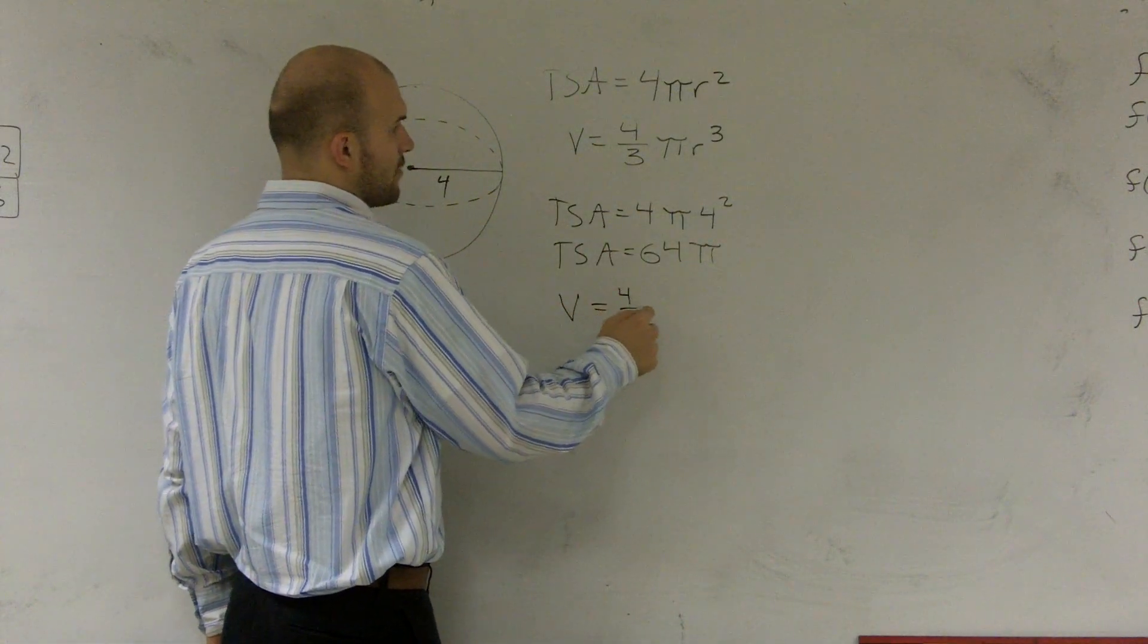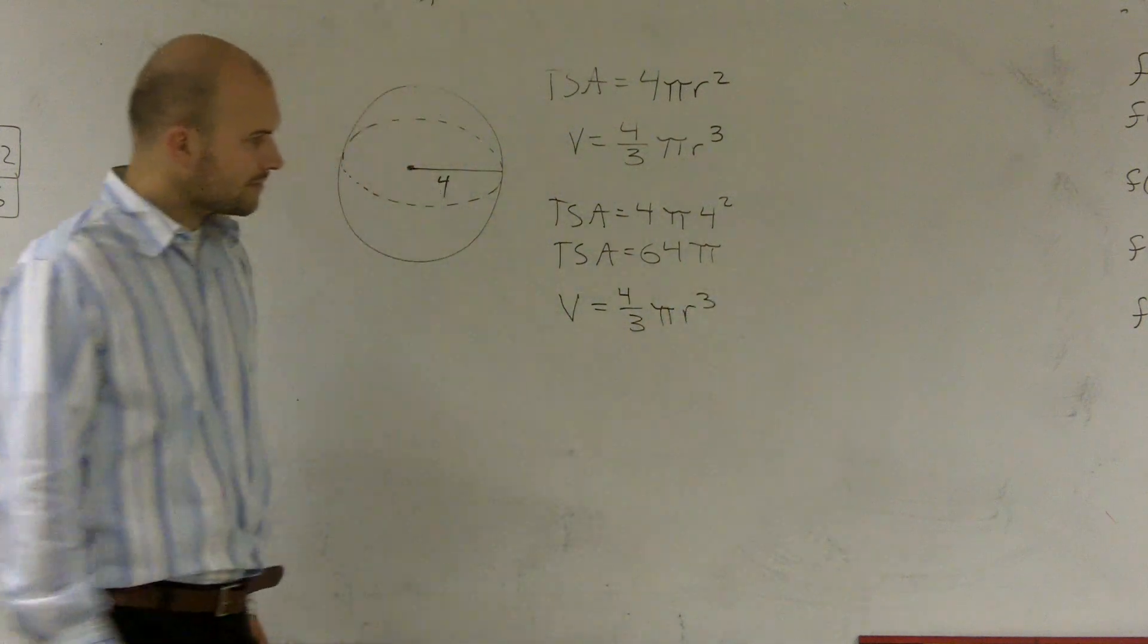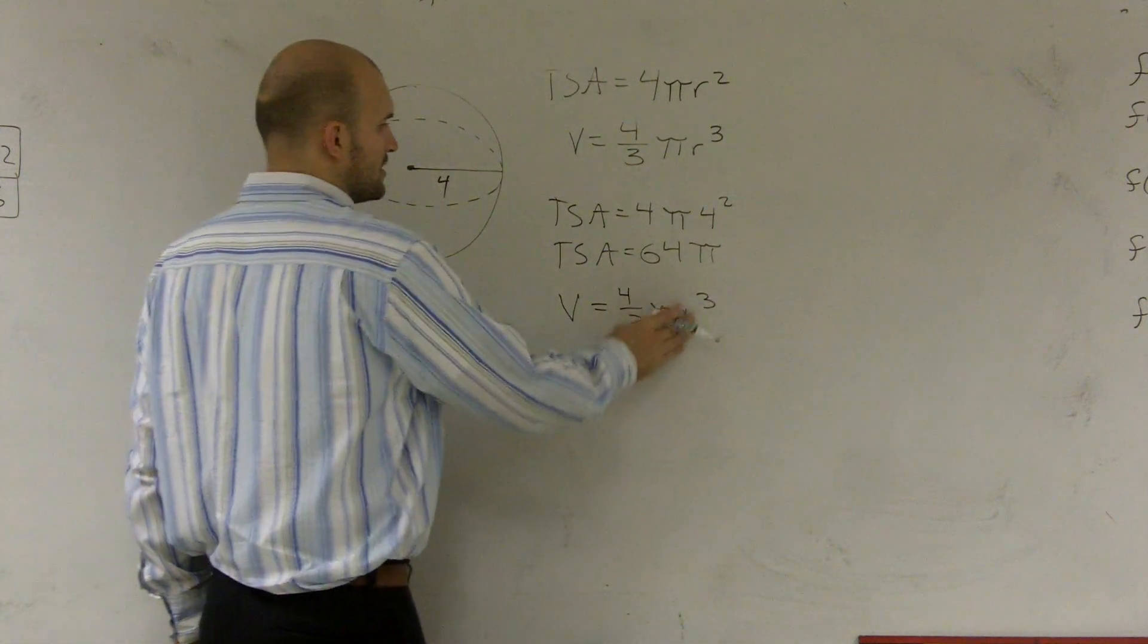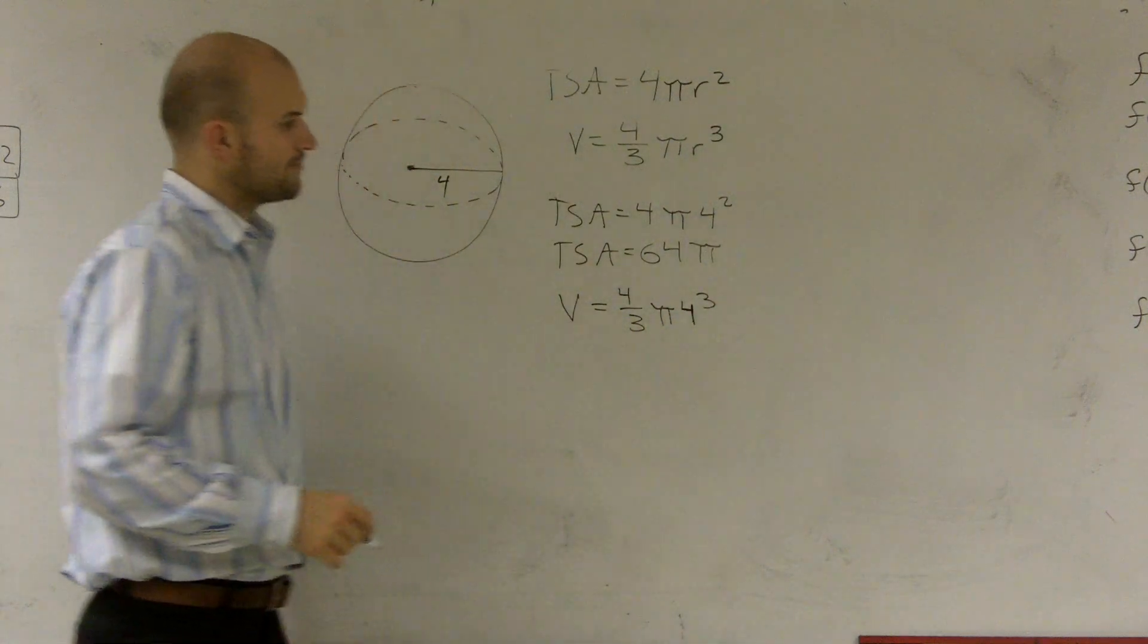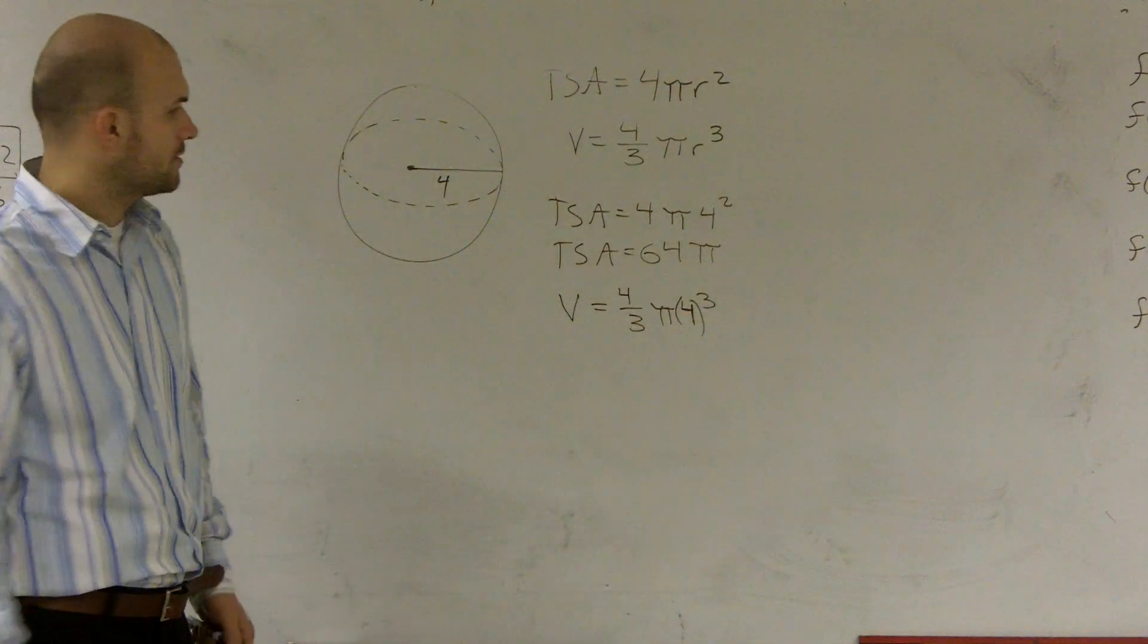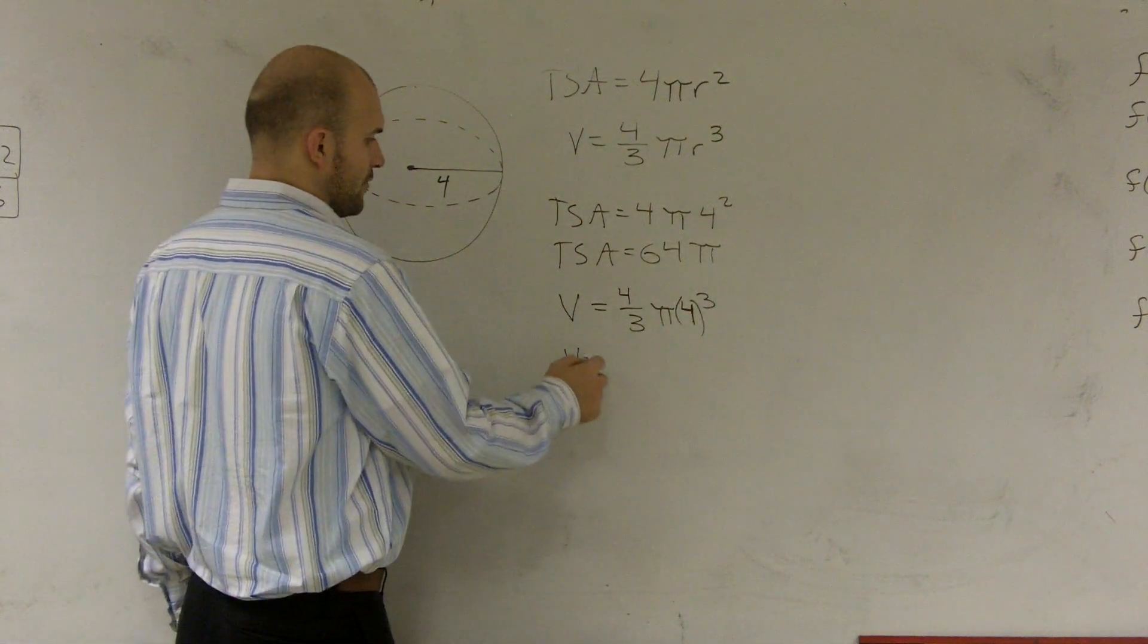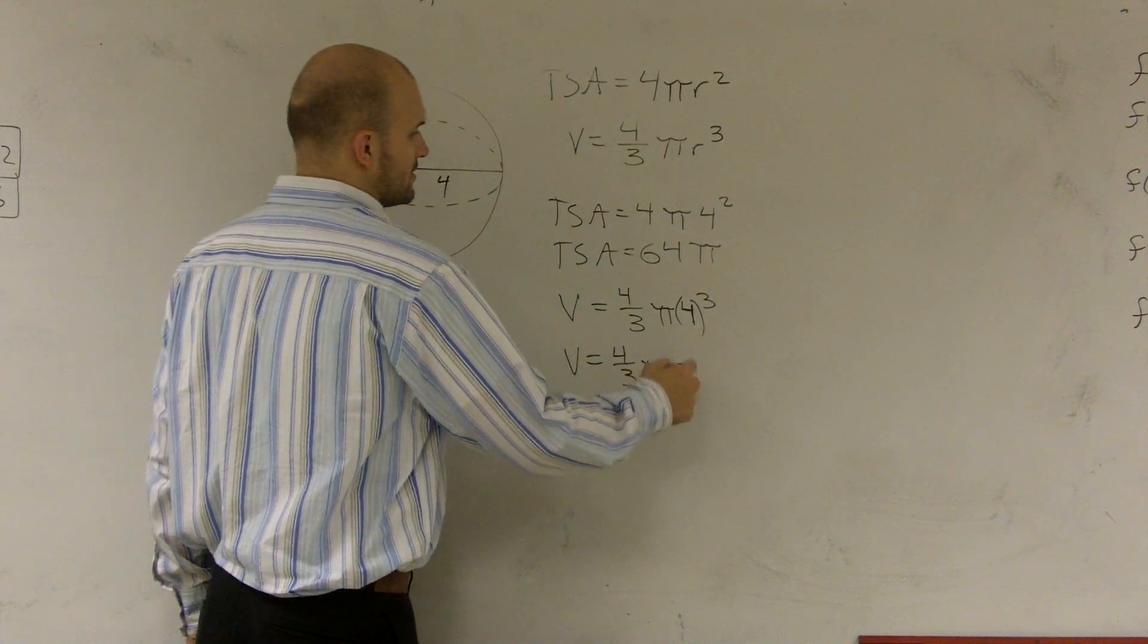Find the volume equals 4 thirds pi r cubed. All right. Well, let's put in a 4 there. So 4 cubed is going to be 64. Volume equals 4 times pi times 64 over 3.